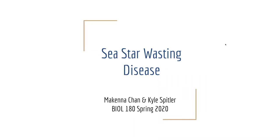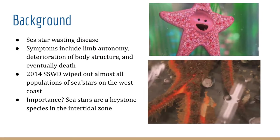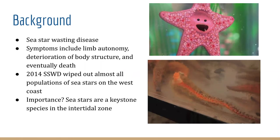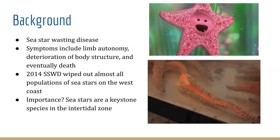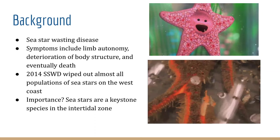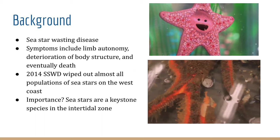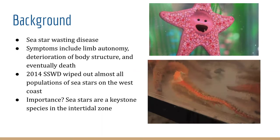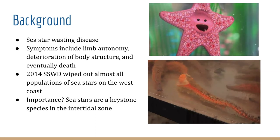Hi, my name is McKenna Chan and I'm Kyle Spittler, and today we're going to explore Seastar Wasting Disease. Some symptoms of this marine disease include limb autonomy, deterioration of body structure, and death. Recently there was an outbreak in 2014 which resulted in the death of most Seastar populations along the west coast. While watching a Seastar's arm walk away from its body is interesting to watch, this disease is important to address and learn about.